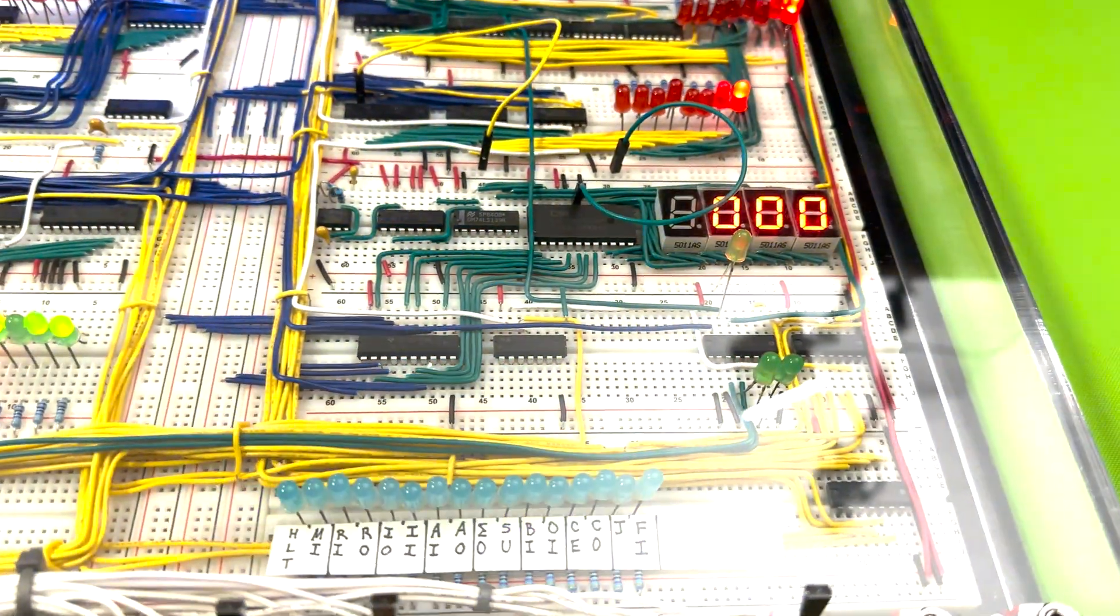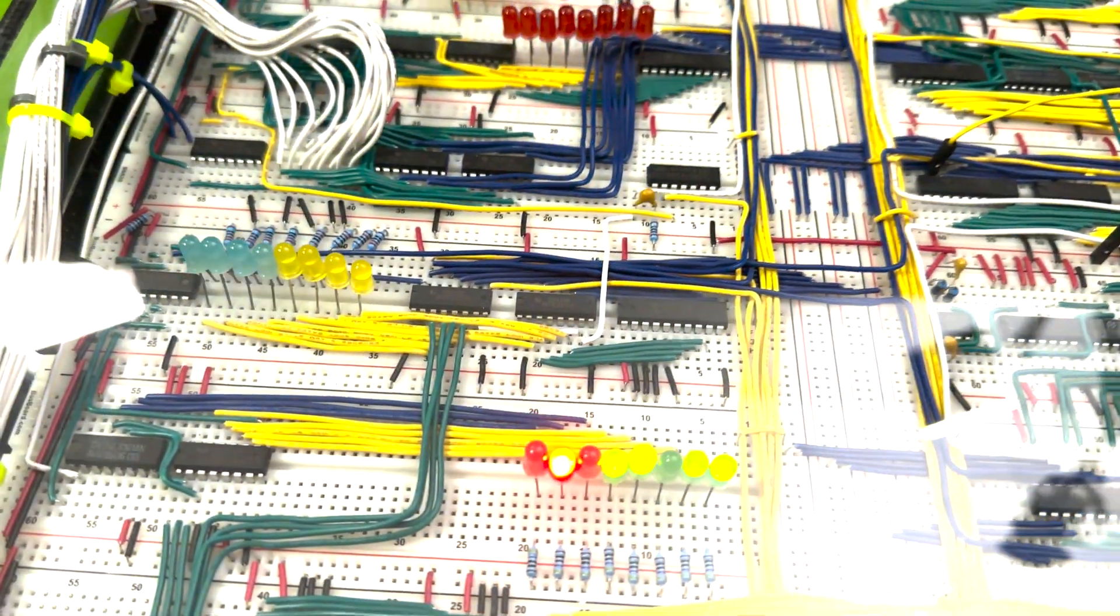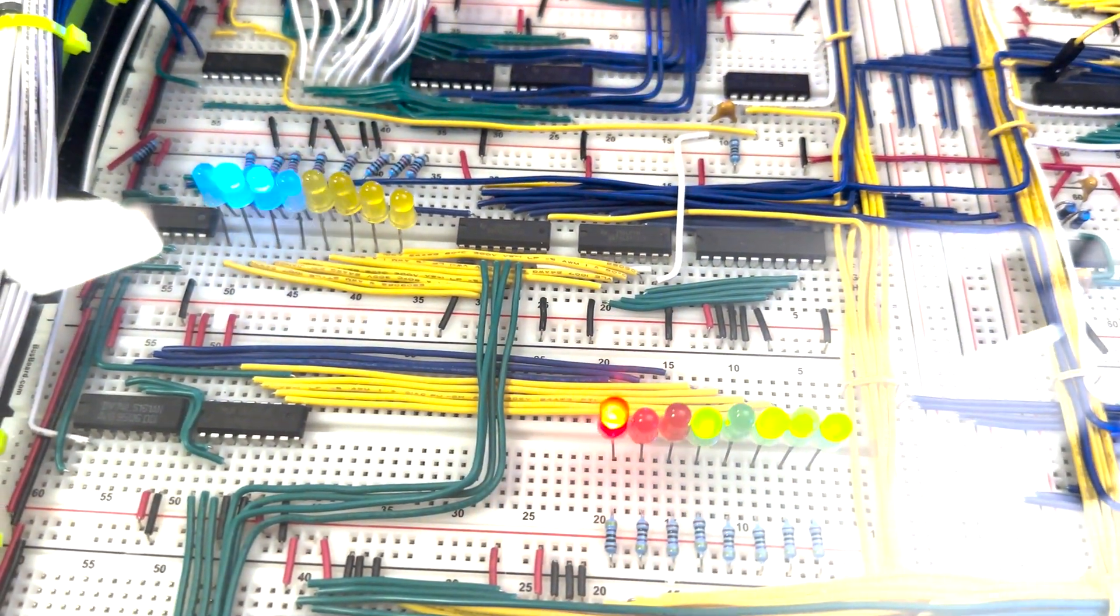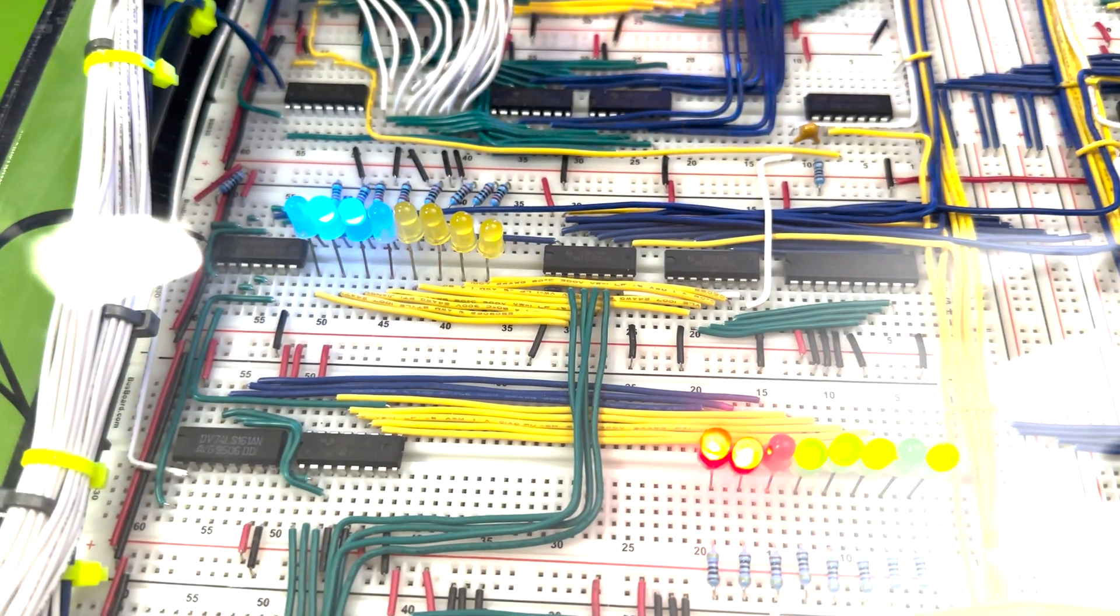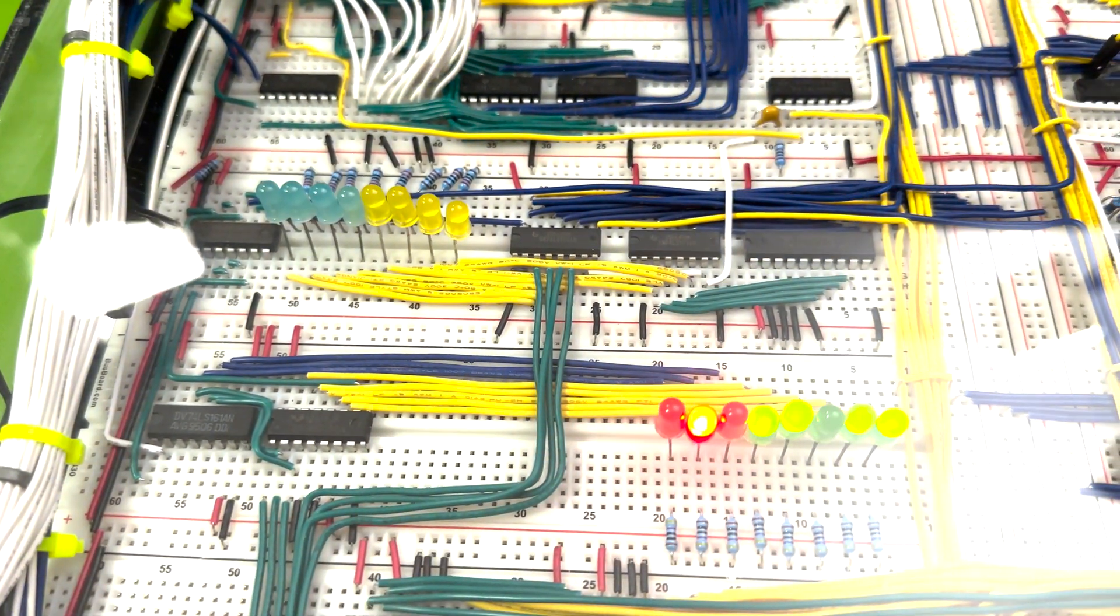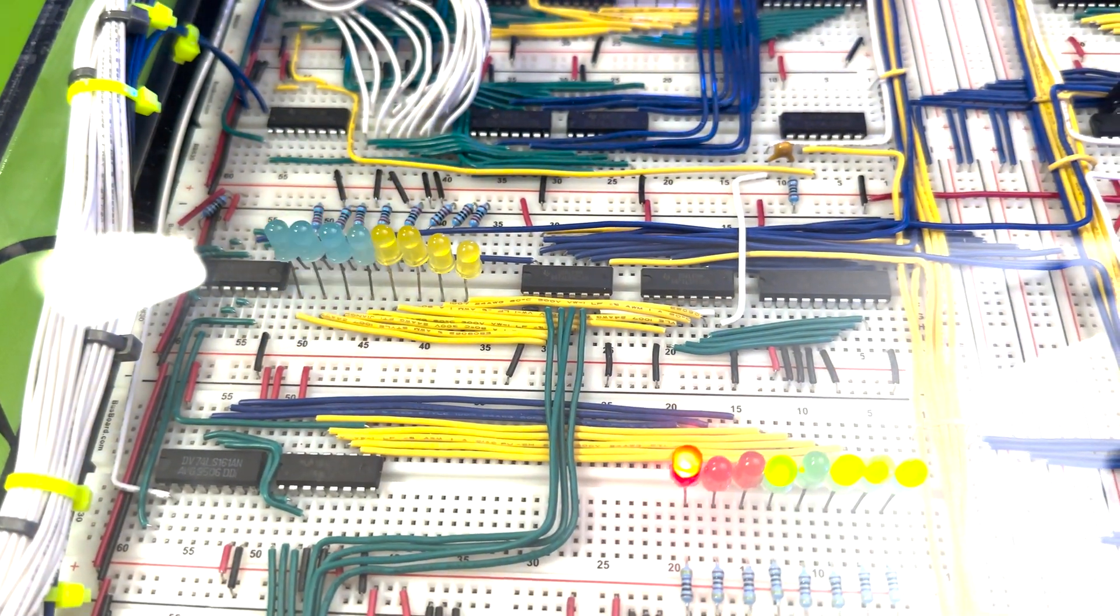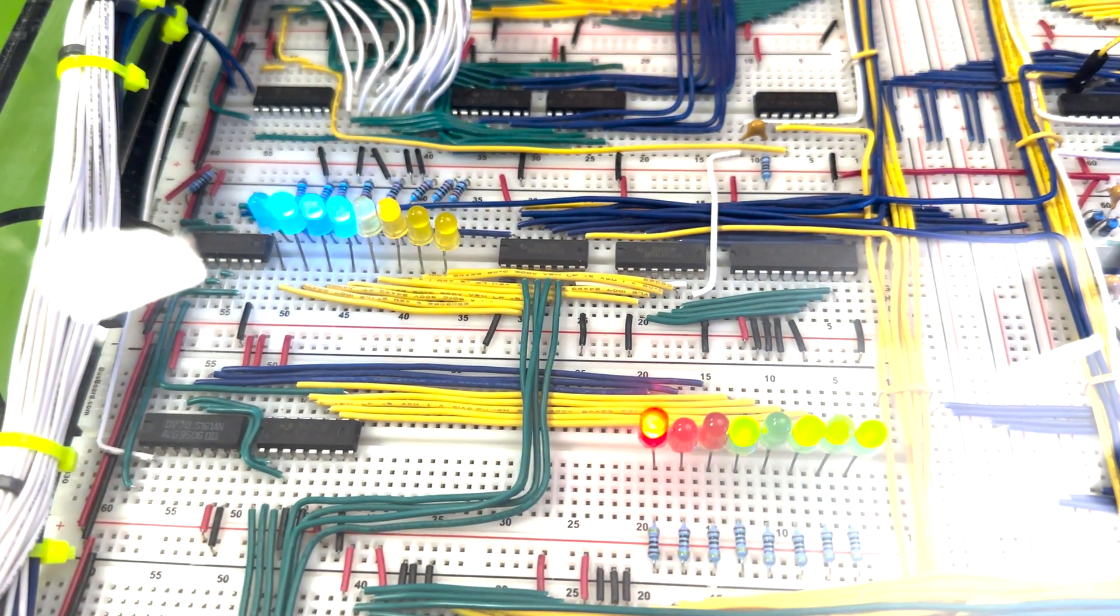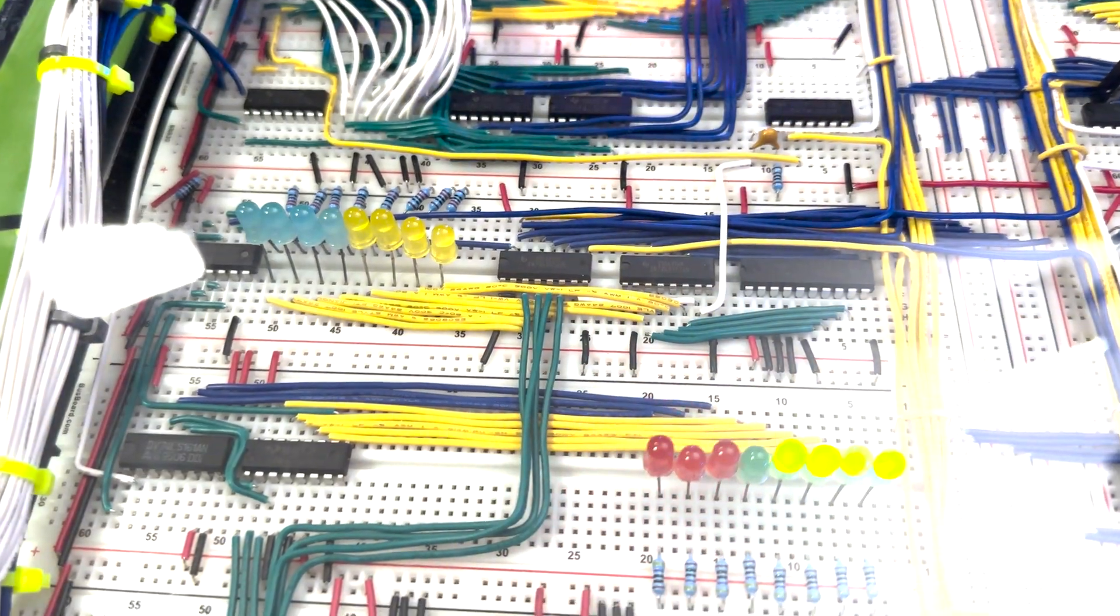Under the RAM module is the micro-instruction register. We save this module for last because it's the most complex one. This register controls the inputs and outputs for each module on this board. So for example, it can determine which module will output data on the bus, and which module will read data from the bus.